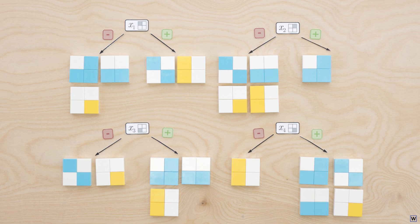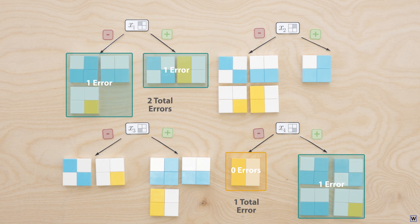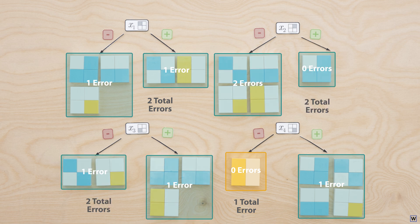And in the event of a tie, we'll just label the node positive. So in our X4 case, we'll label the left node negative and the right node positive, resulting in one misclassification error. Since all other splits make two misclassification errors, X4 is our winner.